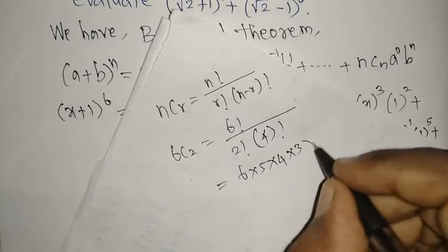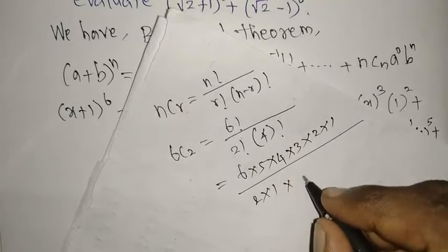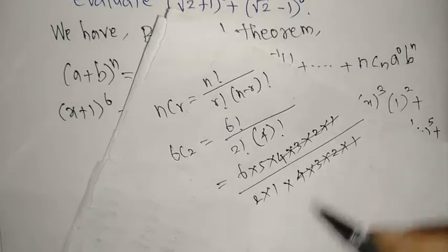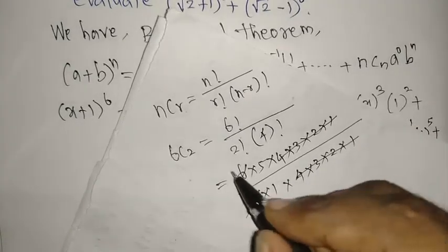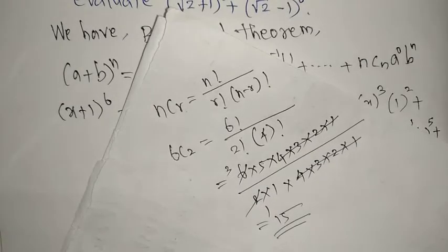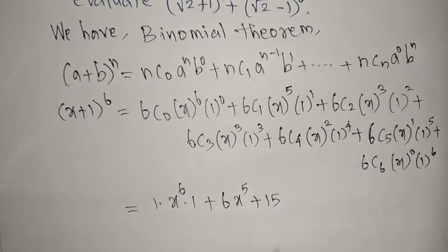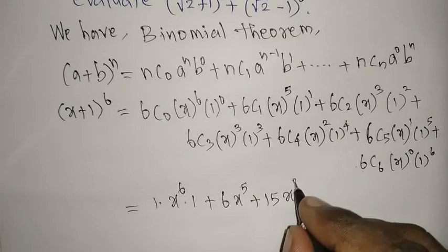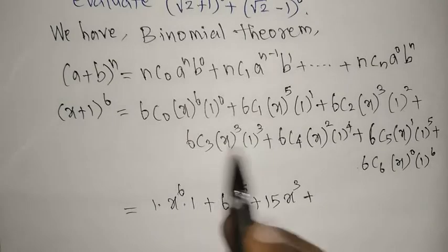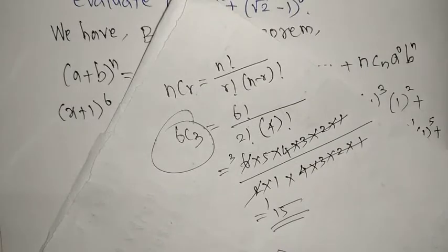Expanding: 6! = 6 × 5 × 4 × 3 × 2 × 1, 2! = 2 × 1, 4! = 4 × 3 × 2 × 1. The 4! cancels, giving 6 × 5 / 2 = 15. So 6C2 = 15. Writing this term: 15x⁴.